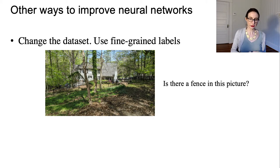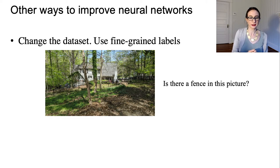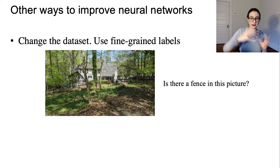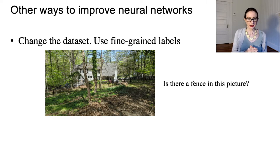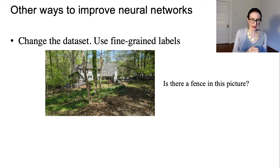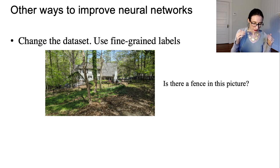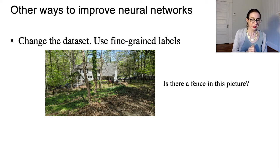There are other ways to improve neural networks as well. You can make a lot of effort in changing your data set — fine-grained labels are one example. If you're training a network to detect a fence, you could have many images each labeled as to whether there's a fence, but if the network doesn't know where the fence is, it has to use a huge amount of data to figure it out. If you simply provide fine-grained labels — telling the network here's where the fences are, this is what a fence is — it can learn much more efficiently.